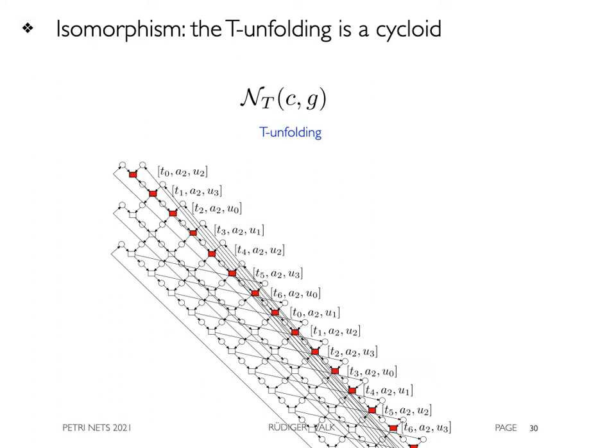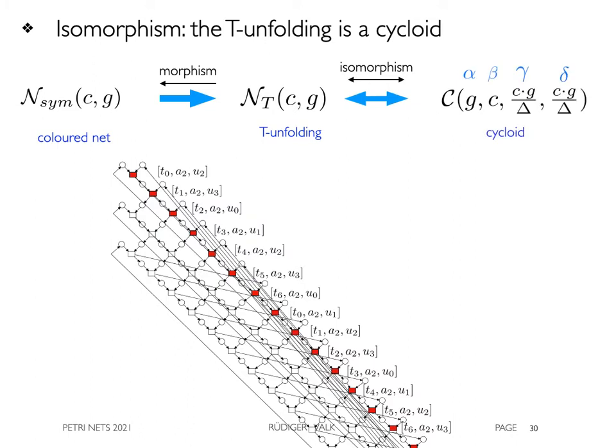Let us now describe the isomorphism as presented in the paper. Recall that N_sub_T is the T-unfolding of the colored net for a number of C cars and G co-cars connected by a net morphism. Now we refer to the proof that N_sub_T is isomorphic to the cycloid where gamma and delta are c times g divided by delta.